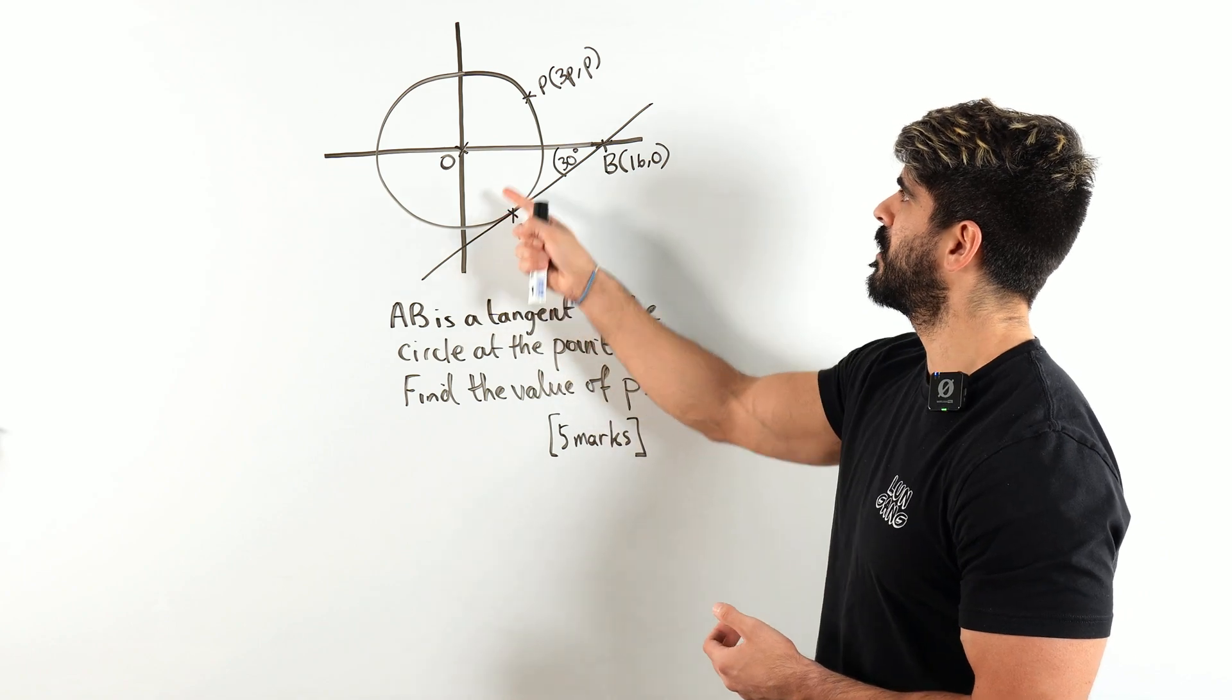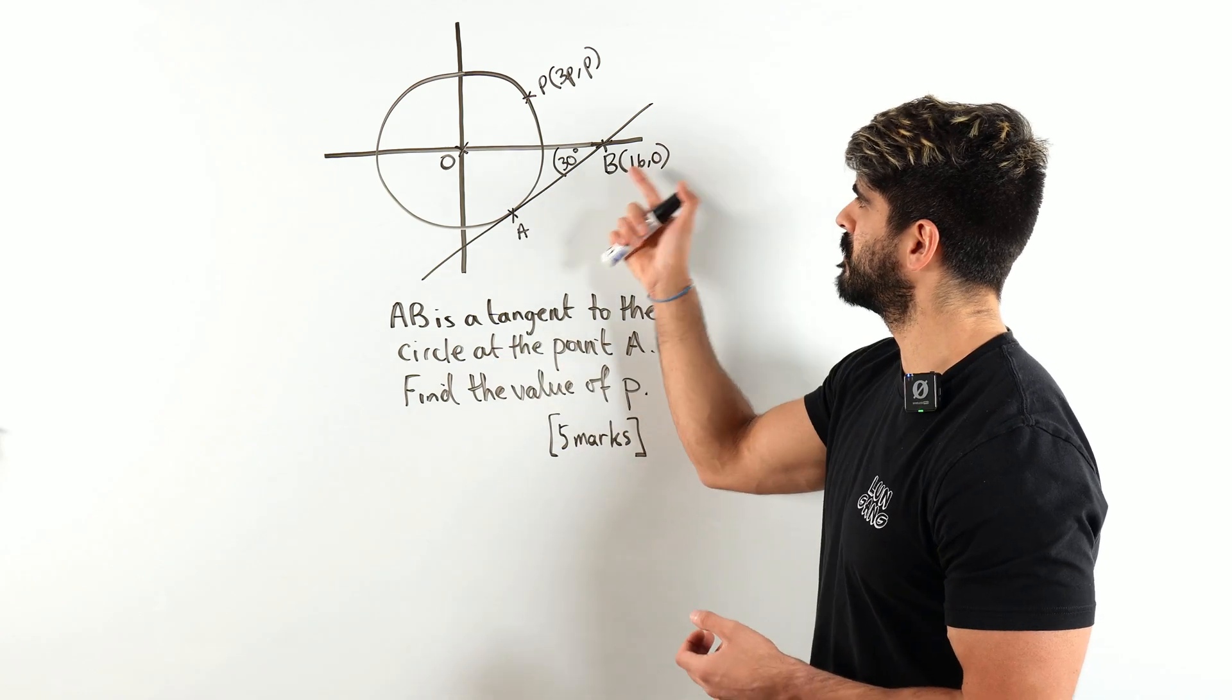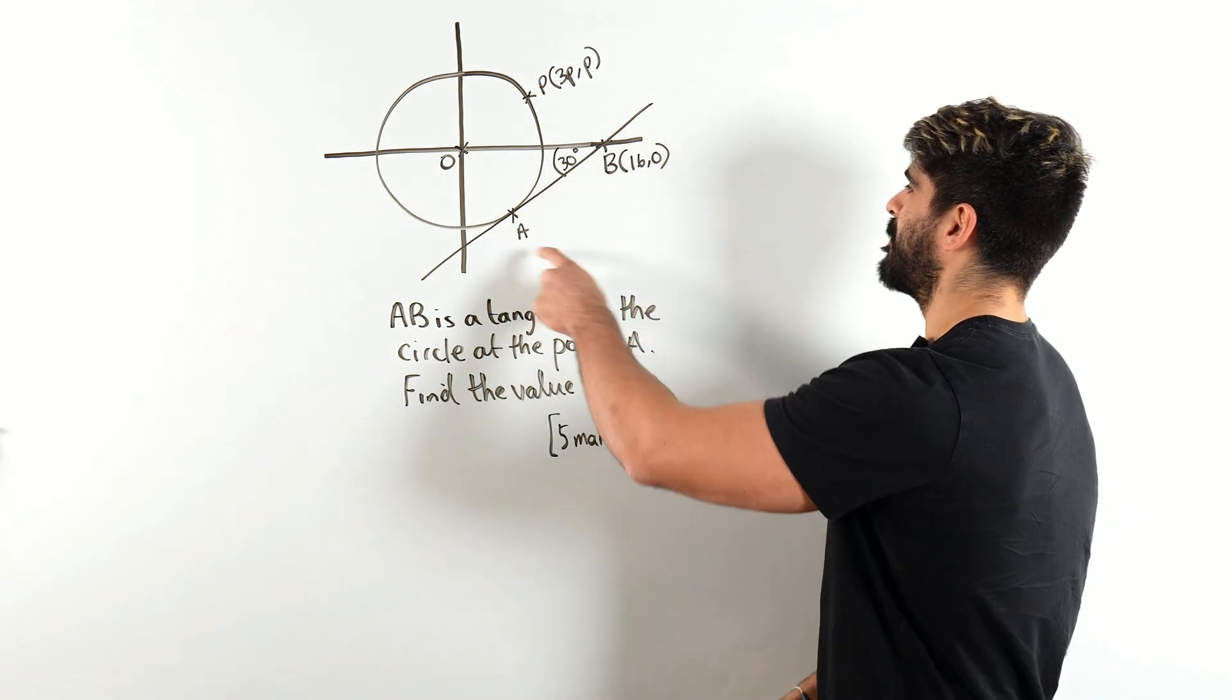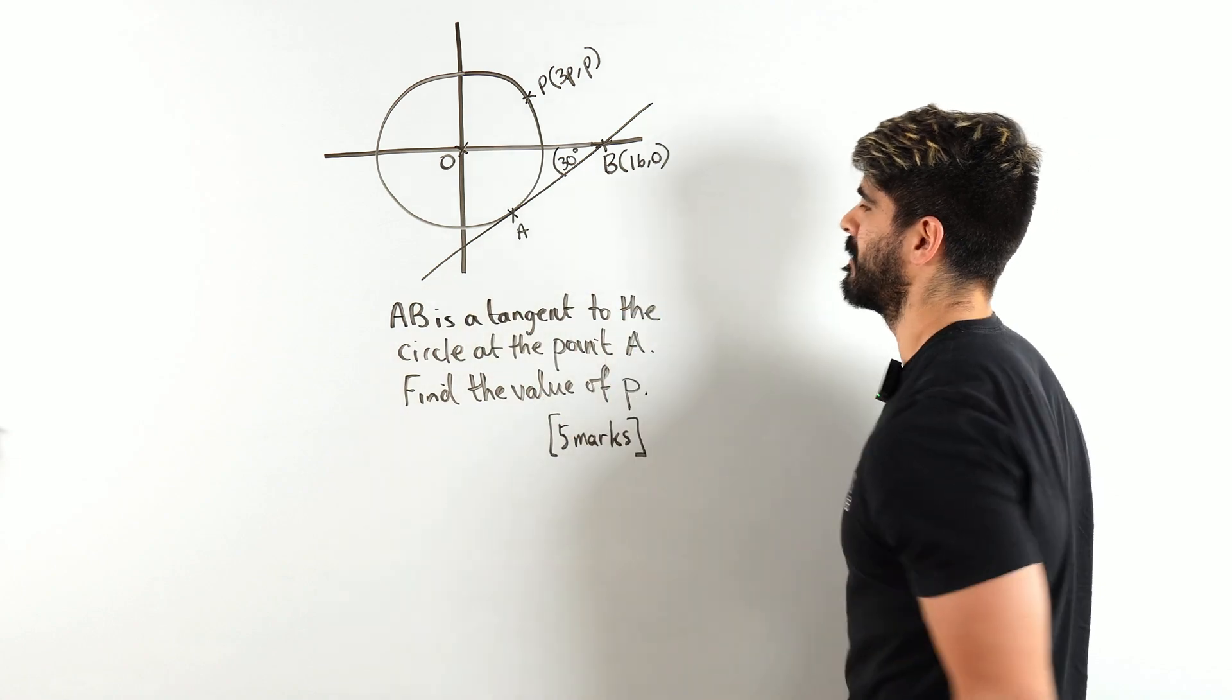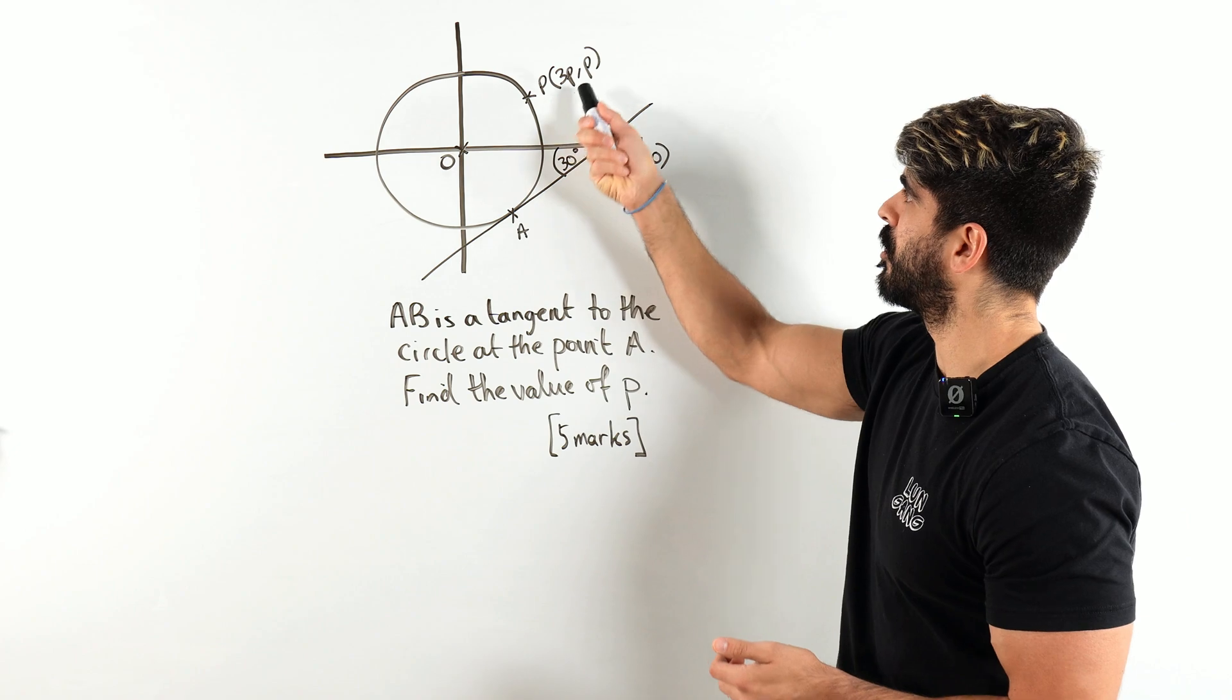So we've got this circle, we've got a point P with coordinates 3p, p, we've got this tangent, we've got this tangent 30 degrees, and we've got the tangent AB. AB is a tangent to the circle at the point A, find the value of P.